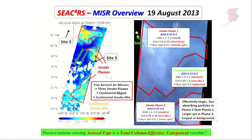Here's one example illustrating the strengths and limitations. This was from the Seeker's field campaign — we got a strip right through the middle of the United States and captured five aerosol air masses: three plumes of smoke of different ages, a continental background, and a mix of the two. Qualitatively, we can say smoke plume one has small absorbing mostly spherical particles, while plume two has smaller, less absorbing, more spherical particles. The passive remote sensing aerosol type constraint is a column-effective categorical variable — it can be useful, but it doesn't have all the information you need.